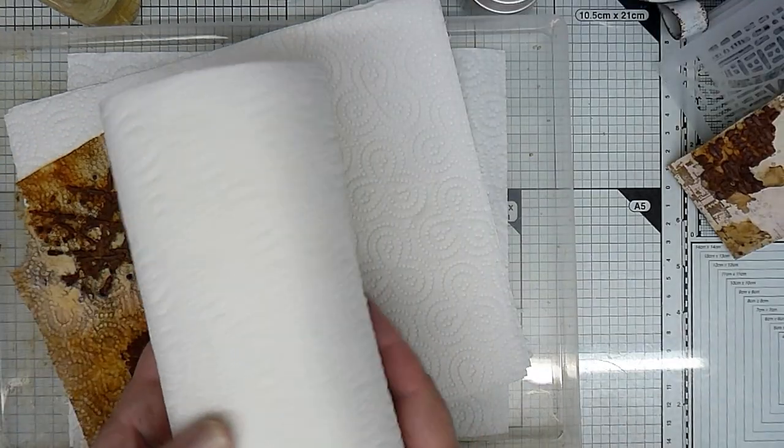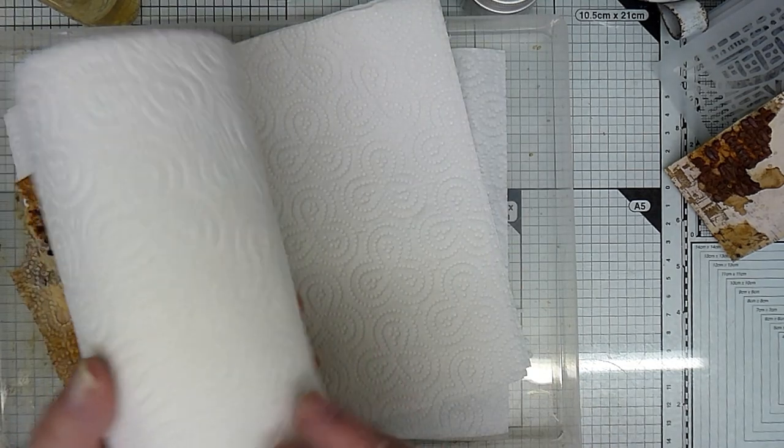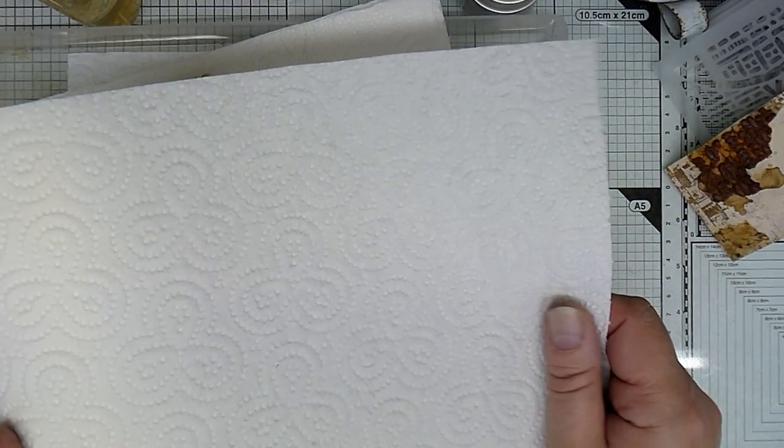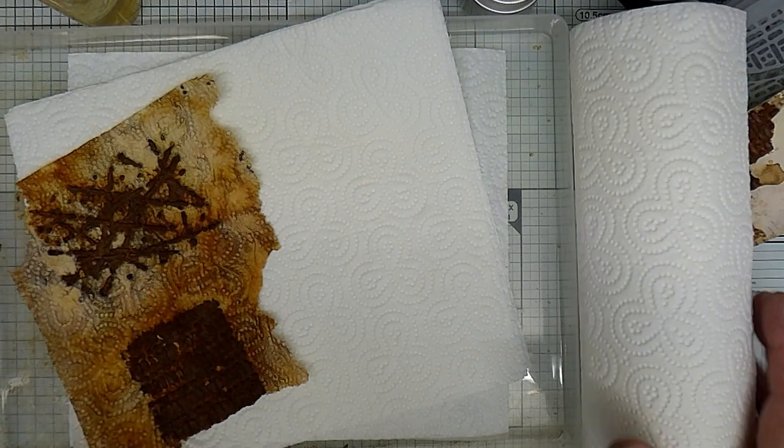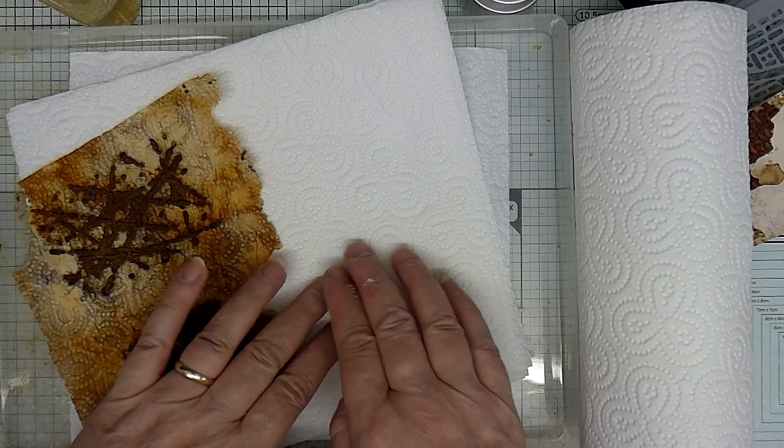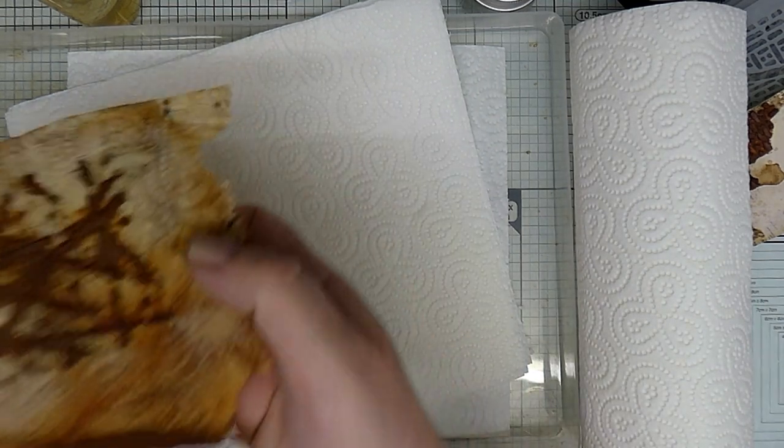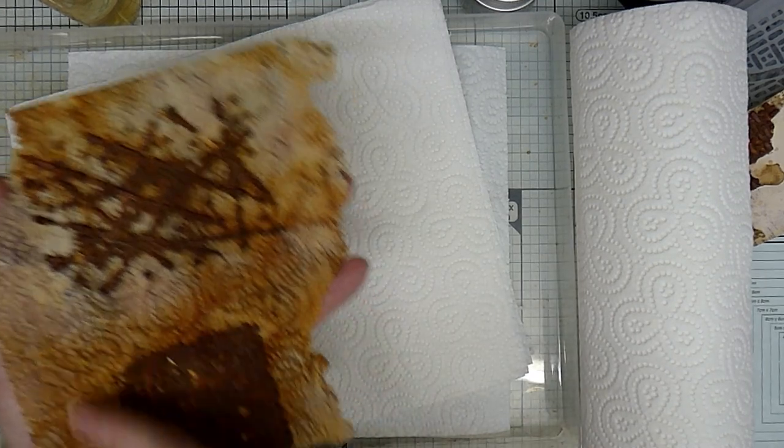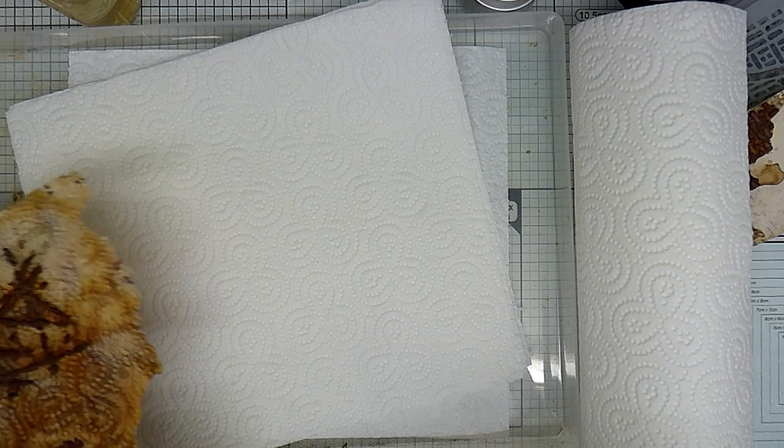We've got kitchen paper. We call it kitchen roll in the UK, but it's just basically paper roll that you would use in the kitchen. This has got a textured pattern on it, which I quite like because it adds an interesting effect, but you can use plain if you've just got some plain.